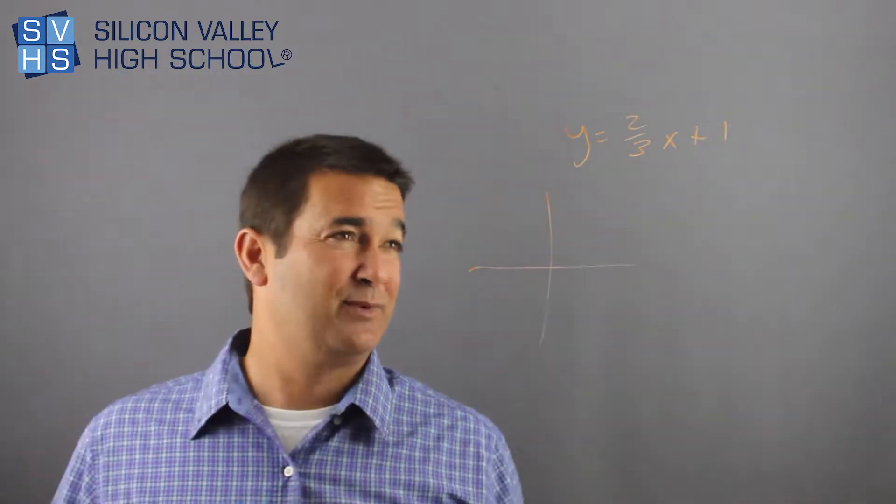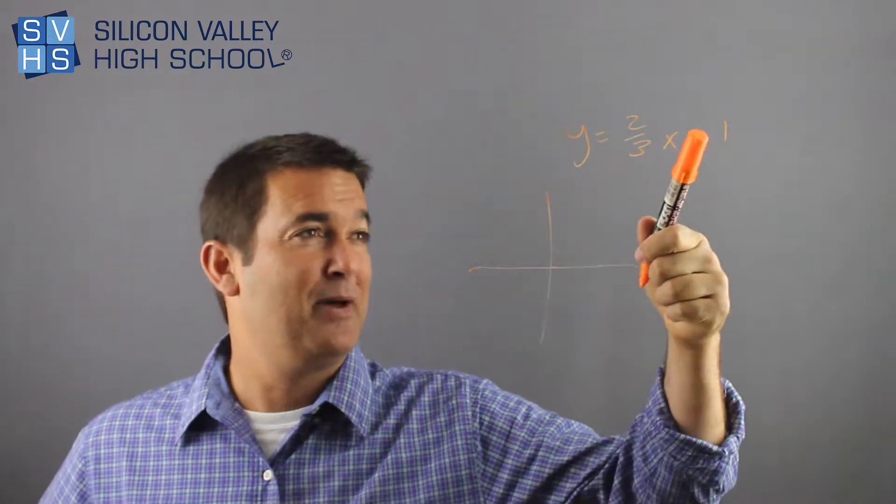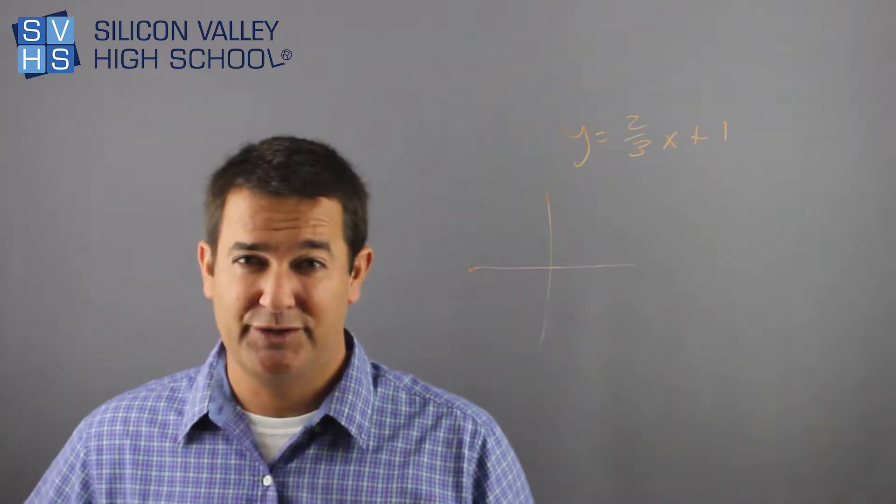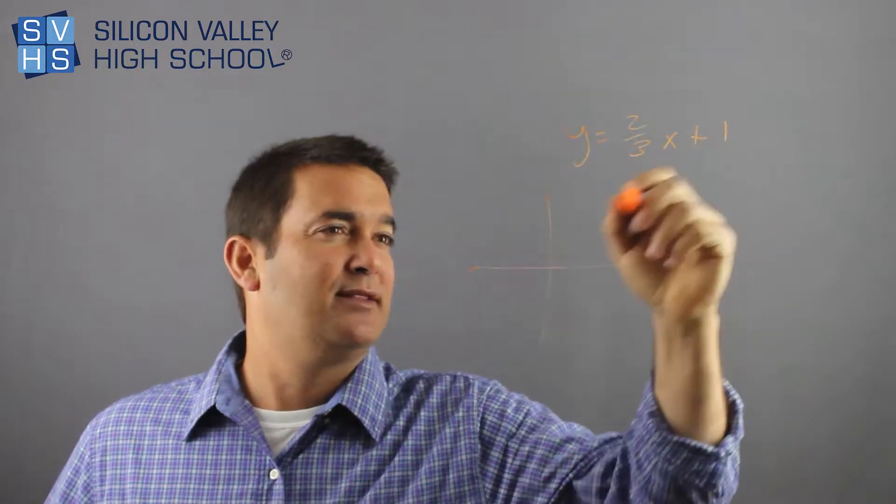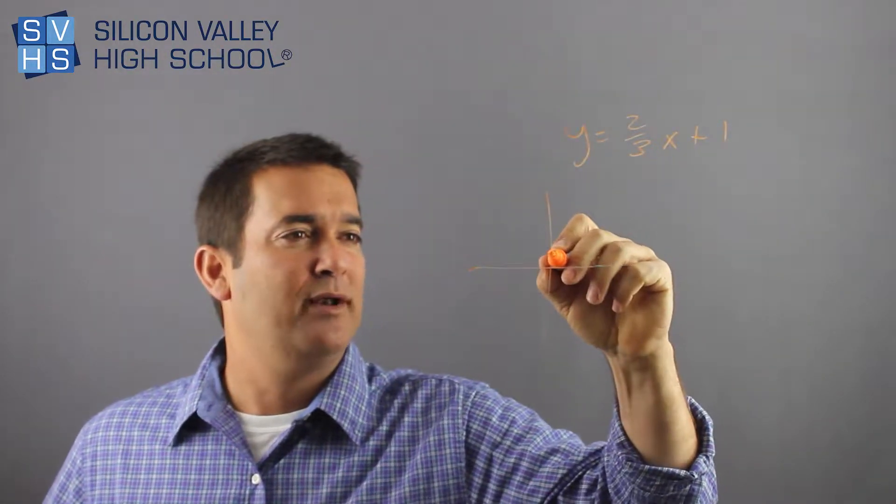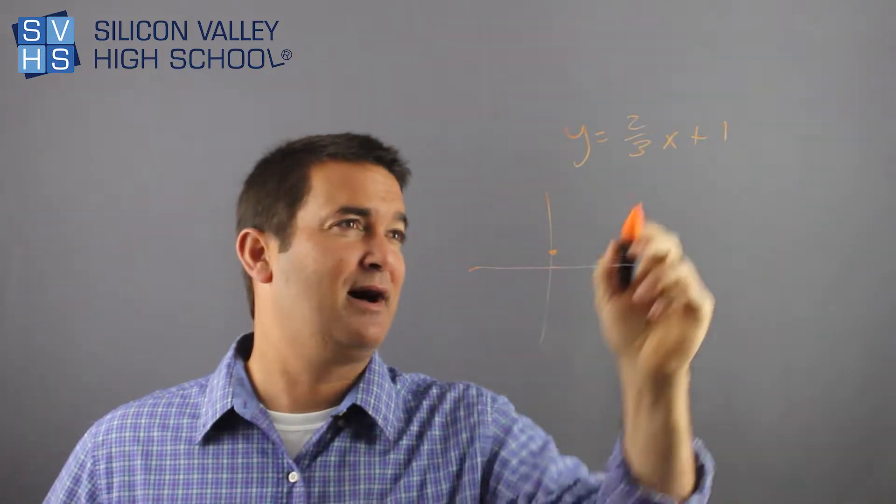And so you would know that what's really important is I have my y-intercept at one and I have my slope at two-thirds. And you'd always start with the y-intercept, so I'll go up one, y-intercept intercepts the y at one, and I'll put my dot.